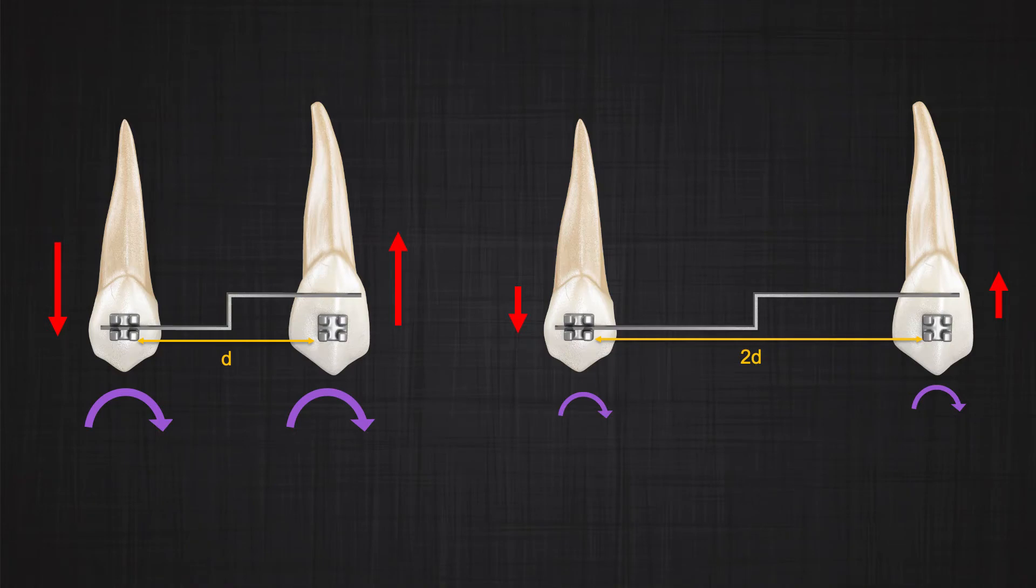Another variable that we need to talk about that is related to the magnitude of the flexibility of the wire is the distance between two brackets. If the two adjacent teeth are far away from each other and you're putting the same step, you will see the wire will be more flexible. Therefore, the magnitude of the forces and moments in your system can drop significantly.